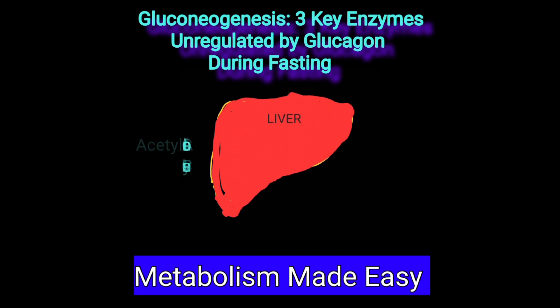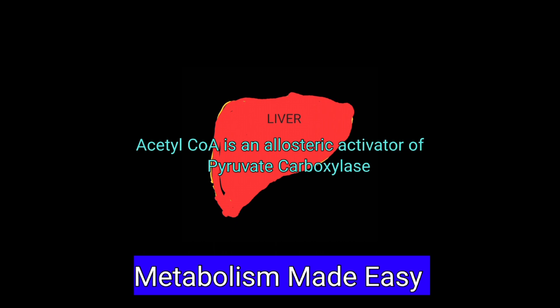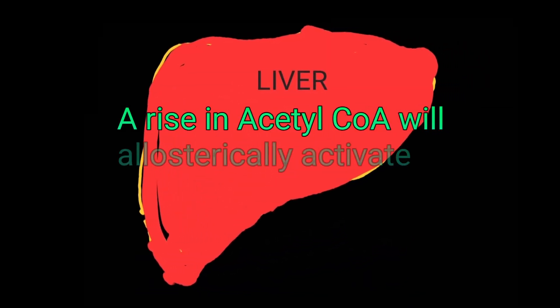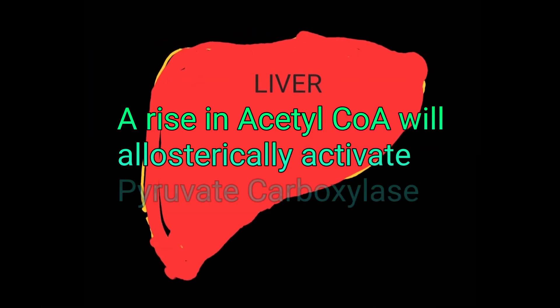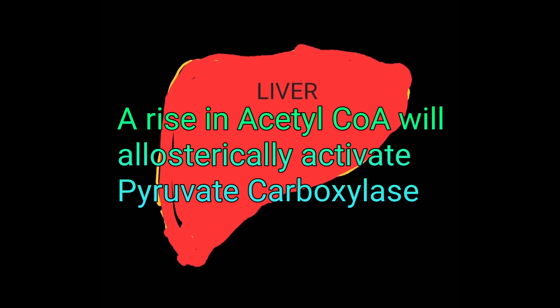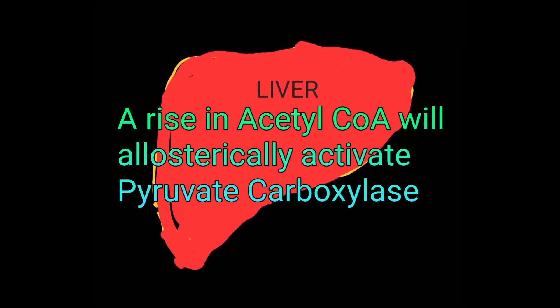Another important allosteric regulator of gluconeogenesis is acetyl-CoA. Acetyl-CoA accumulates in the liver due to beta-oxidation of fatty acids. This acetyl-CoA allosterically activates pyruvate carboxylase, a key bypass enzyme in gluconeogenesis.